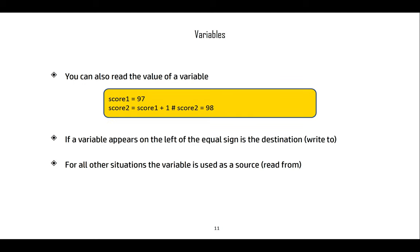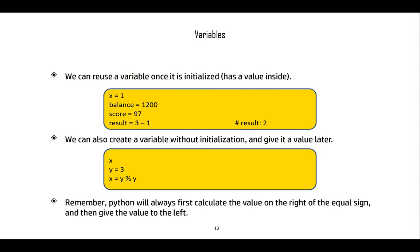You can read the value of a variable. For example, score = 97, then score2 = score + 1, which means score2 is 98. If a variable appears to the left of the equal sign it is the destination — where we write. If it appears to the right, it is the source — we are reading from it.